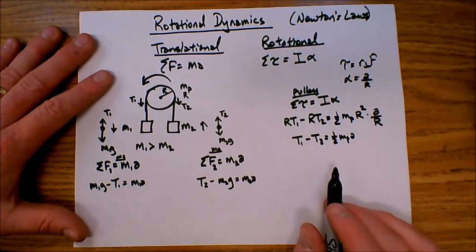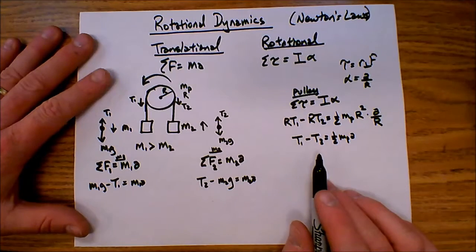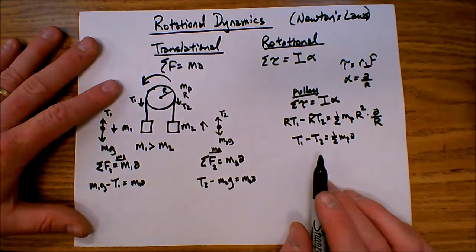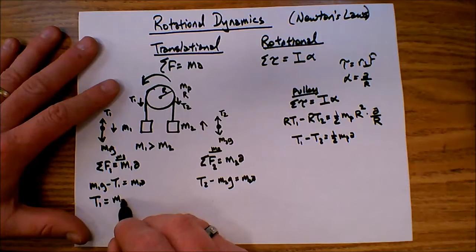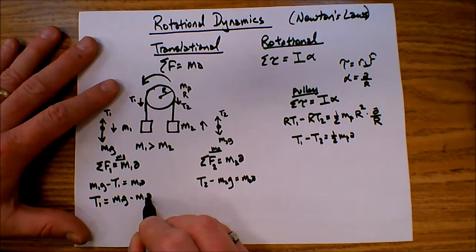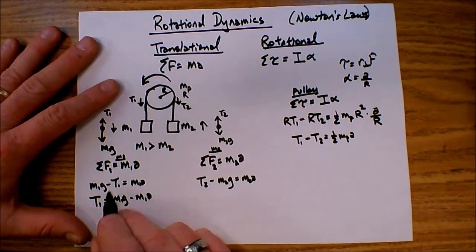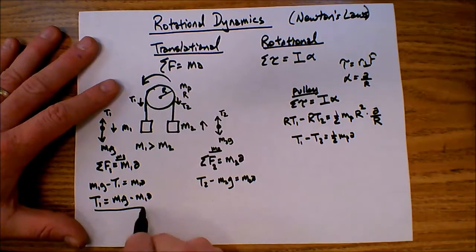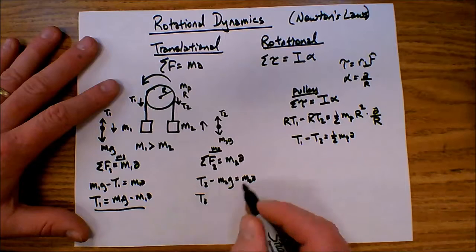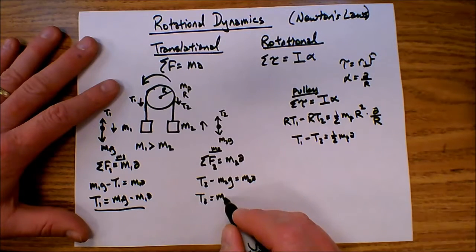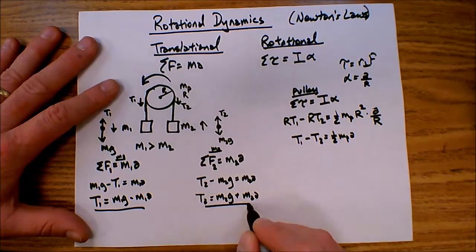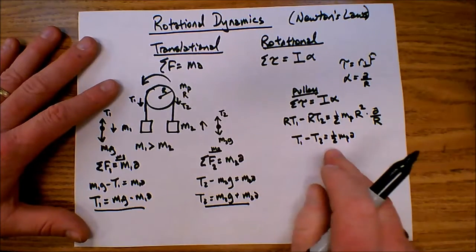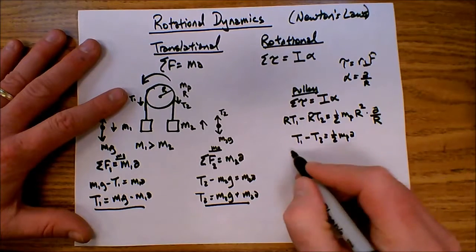So it's at this point where I have a system of three equations with three unknowns. I'm going to do a simple substitute and solve. I'm going to solve this for T1: T1 equals M1G minus M1A. T2, a little bit easier, M2G plus M2A. And then I'm going to simply plug these in up here to this equation to eliminate those variables.